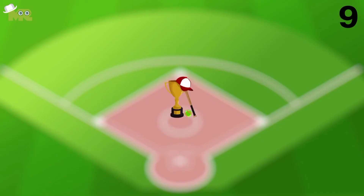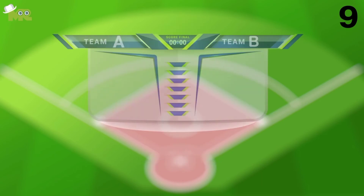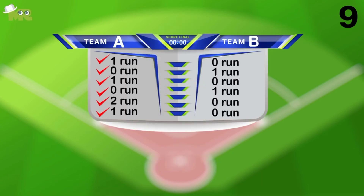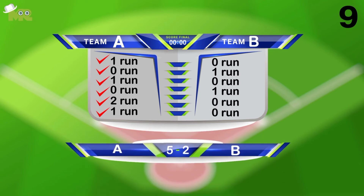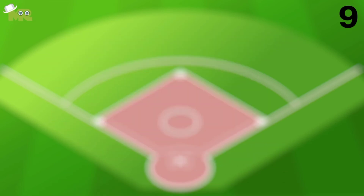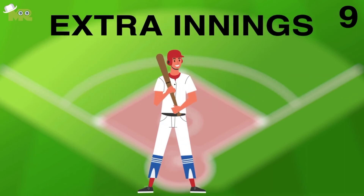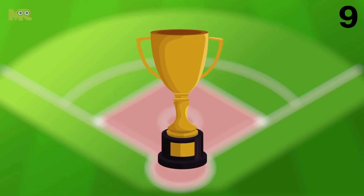Rule 9: The winner of the game will be decided after all 7 innings have been completed. The team with the most runs after 7 innings will be declared the winner. If after 7 innings the game is tied, then extra innings will be played until the winner is found.